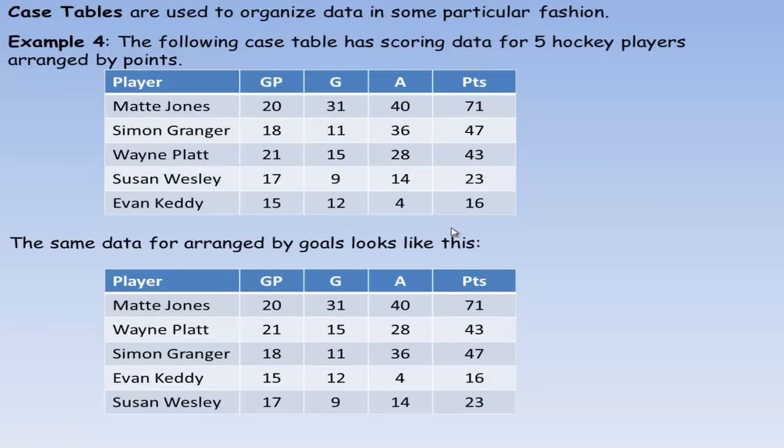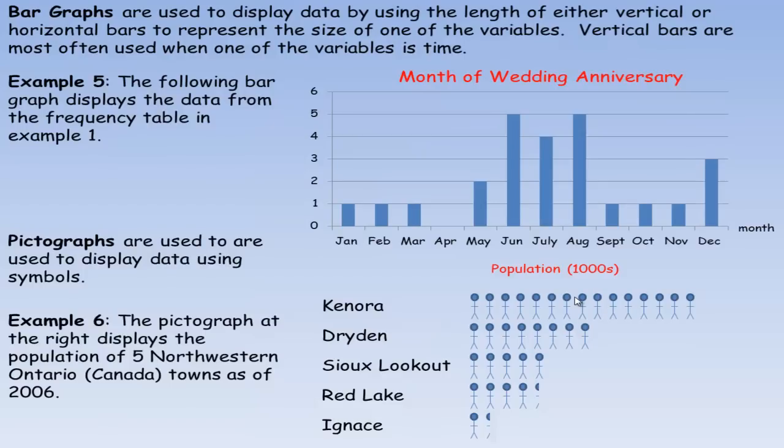Case tables are used to organize data in some particular fashion. In example four, the case table has scoring data for five hockey players arranged by points. Matt Jones has the most points at 71, Simon is next at 47, Wayne's next at 43, Susan has 23 points and Evan has 16. If we arrange it by goals instead, Matt had the most at 31, but Wayne's next at 15, then Simon, Evan at 12, and Susan at 9. It's often used for sports data and is a great way to organize lots of data.